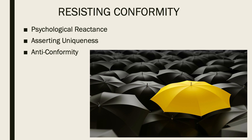There's also anti-conformity. An anti-conformist is an individual who takes pleasure in being a contrarian — going against the group. The anti-conformist closely monitors the group's norms, but does so in order to behave in exactly the opposite way. So people do not always conform, and when they don't, it can be for a variety of different reasons.